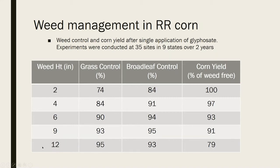Let's jump all the way down to 12-inch tall weeds. How often have you seen a field of corn with 12-inch tall weeds in it? It's actually a pretty common sight. In terms of grass control, we had 95% grass control at year end — just as clean as your granddaddy's scalp. Broadleaf control was 93%. We would be tickled to death with that. But look at your last column — 79% of the corn yield that we had in the weed-free. Even though we had great weed control, we sacrificed about 21% of our yield.